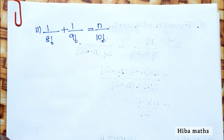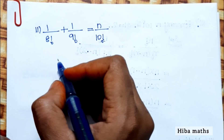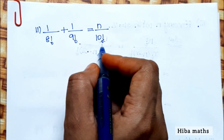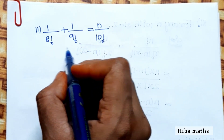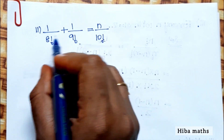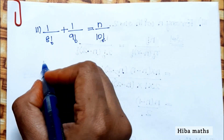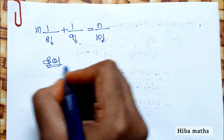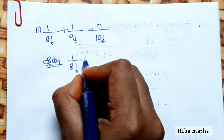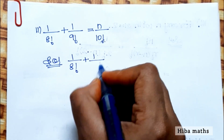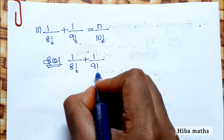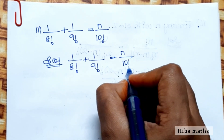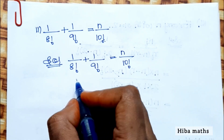Now for the second part: 1 divided by 8! plus 1 divided by 9! equals n divided by 10!. The smallest factorial here is 8!, so we will multiply both sides by 8! to simplify.